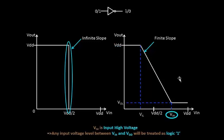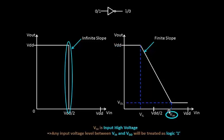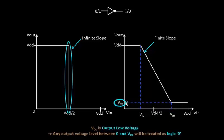There is also VIH — the input high voltage. VIH states that any input voltage lying above VIH up to VDD will cause the output to be expected low, which is VOL. We'll cover a more practical representation of VOH and VOL and derive the formulas for noise margin in the next video. Thank you.